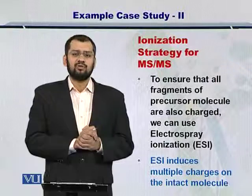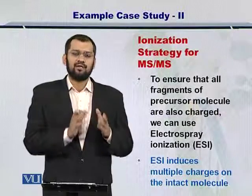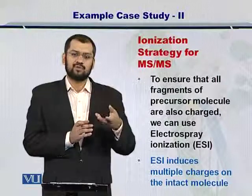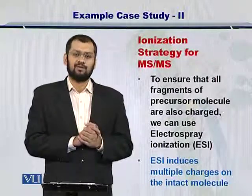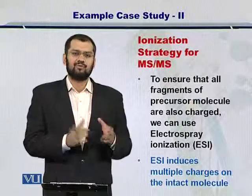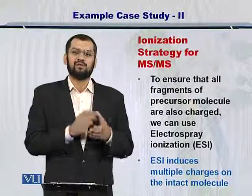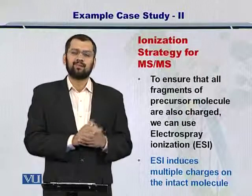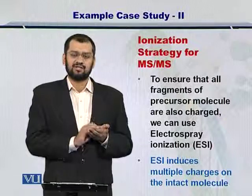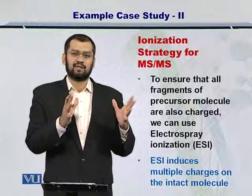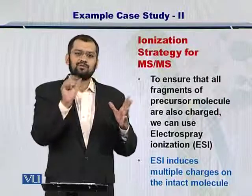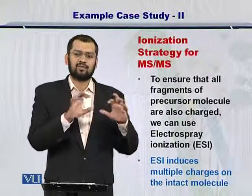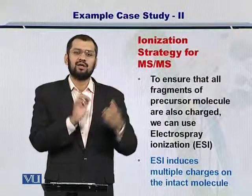At this point it is important to review ionization. A protein can only be measured in a mass spectrometer if it is charged. If you fail to charge a protein molecule, it will not be detected. Therefore, fragments without a net charge cannot be measured by the mass spectrometer. ESI, or electrospray ionization, induces multiple charges on the intact protein. If there are multiple protons on a protein and you fragment it, there is a good chance that both resulting fragments will carry some portion of the net charge.